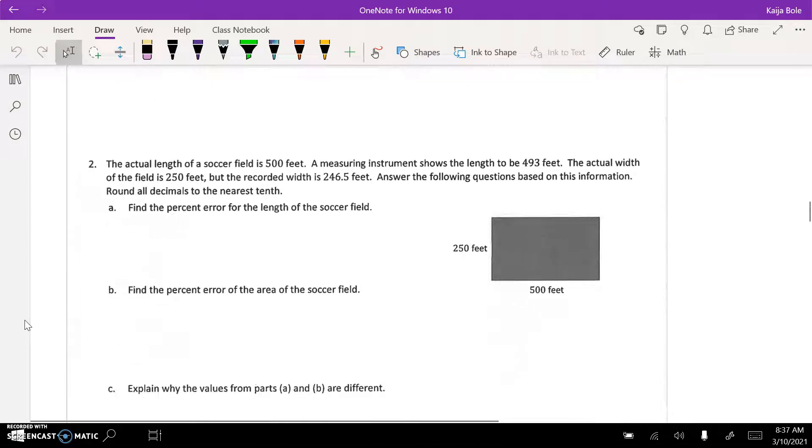One question that gets a little tricky is number two part b, where it says find the percent error of the area of the soccer field. The first thing that you have to do is calculate the areas. In the picture here that's the actual, and you have to remember that area is length times width.